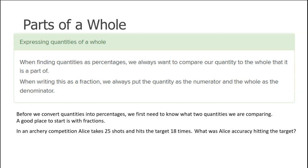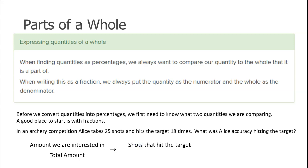The general rule is the amount that we are interested in, shown over or as a fraction of the total amount possible. So in our case, that is the shots that hit the target over the total number of shots that were taken. The shots that hit the target was 18 and the total number of shots taken was 25. So as a fraction, we can say her accuracy was 18 out of 25 shots.